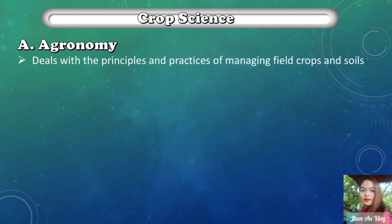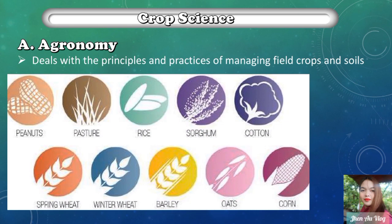The first major area is agronomy, which deals with the principles and practices of managing field crops and soils. Crops that belong to the agronomy sector include peanuts, pastures, rice, sorghum, cotton, spring wheat, winter wheat, wheat, barley, oats, corn, millet, and adlai. Some books also include horticultural plants introduced as plantation crops under the agronomy sector.